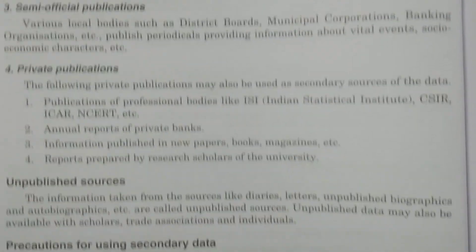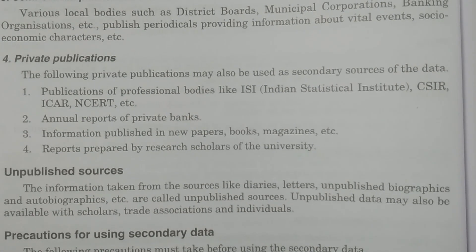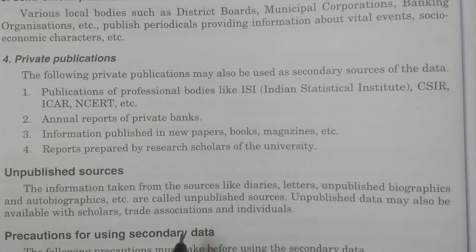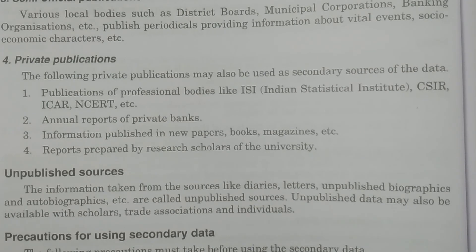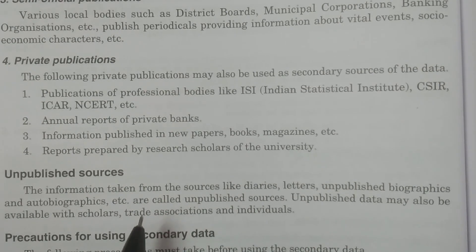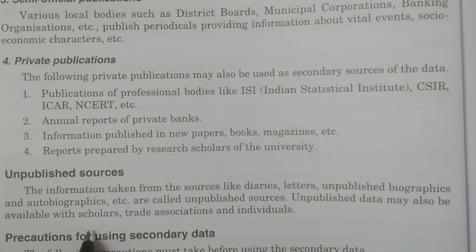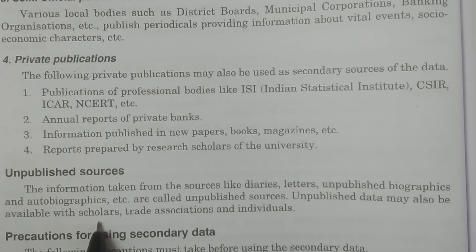Now we come to unpublished sources. If you collect data from diaries, letters, autobiographies, or biographies, that qualifies as an unpublished source. Data can also come from individuals or organizations that have not published their records. Such data is not a published source — it is unpublished — but secondary data from scholars, researchers, trade associations, and individuals can still be used.